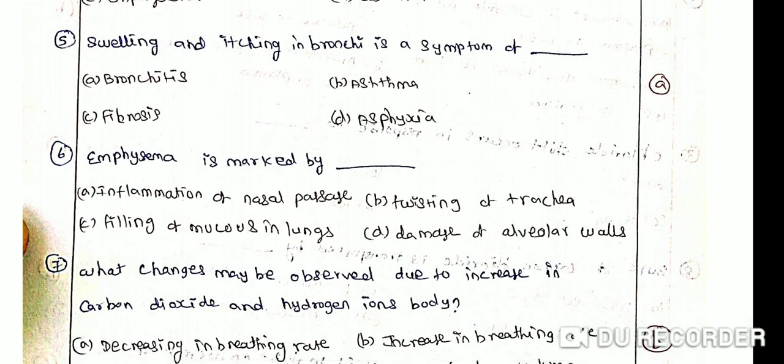Emphysema is marked by: A, inflammation of nasal passage; B, twisting of trachea; C, filling of mucus in lungs; D, damage of alveolar wall. The correct answer is D, damage of alveolar wall.